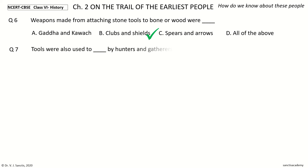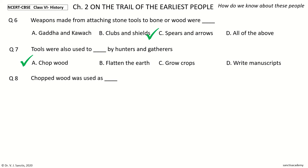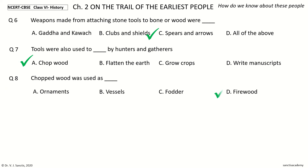Question 7: Tools were also used to ___ by hunters and gatherers. The options: chop wood, flatten the earth, grow crops, write manuscripts. Your time to choose. And the answer is chop wood. Question 8: Chopped wood was used as ___. The options: ornaments, vessels, fodder, firewood. Your time to choose. And the answer is firewood.